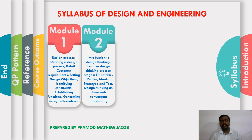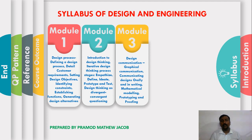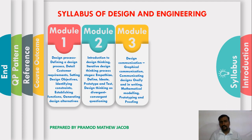Module 2 deals with design thinking — the iterative design thinking process and its stages: empathize, define, ideate, prototype, and testing — as well as divergent-convergent questioning. Module 3 covers design communication: how to communicate design in graphical format, oral and written formats, mathematical modeling, and prototyping — which means creating a toy model or dummy model of the actual system.